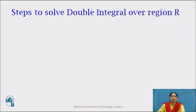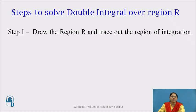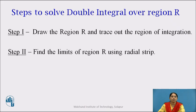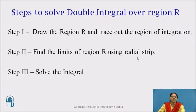Let us see the steps to solve a double integral over the region R, where region R is a polar region. Step 1: draw the region R and trace out the region of integration. Step 2: find the limits of region R using a radial strip. Step 3: solve the integral.